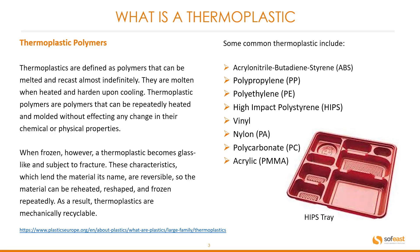Some common thermoplastics include ABS, polypropylene or PP, polyethylene which is PE, high impact polystyrene, vinyl, nylon, polycarbonate, and acrylic. You can see a typical biscuit tray here made of HIPS, which is high impact polystyrene.